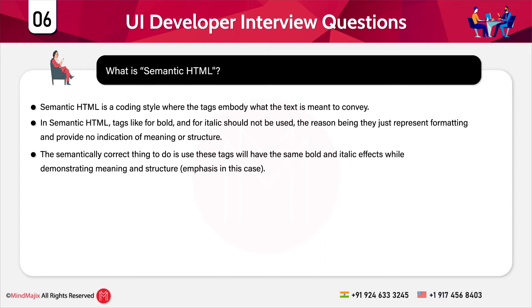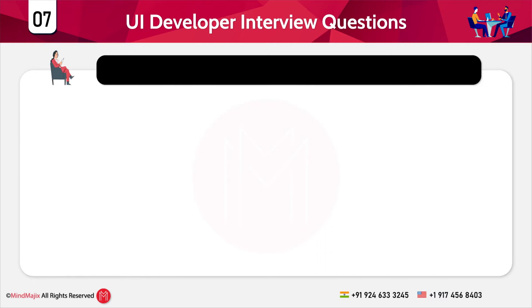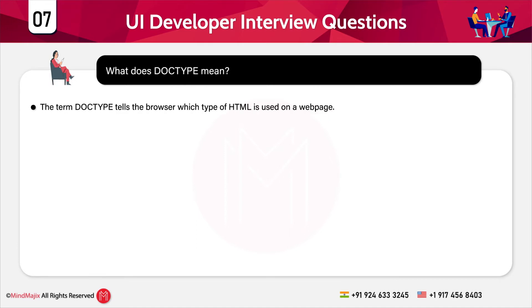The next question is: what do you mean by DOCTYPE? The DOCTYPE tells the browser which type of HTML is used on a web page, and the browser uses DOCTYPE to determine how to render a page. Failing to use a DOCTYPE or using a wrong DOCTYPE may load your page in quirks mode.